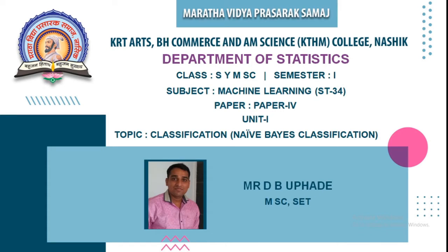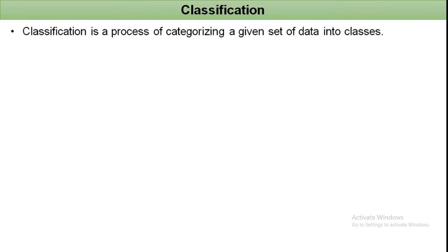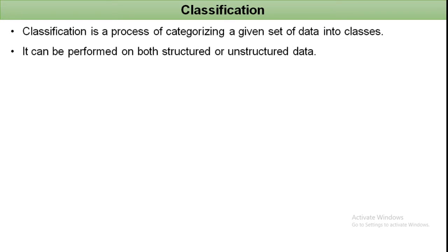Hello students, welcome to the second lecture of machine learning. In this lecture we will see the topic classification, particularly Naive Bayes classification. Classification is the entire process of making homogeneous and non-overlapping groups according to their similarities. Classification is a process of categorizing a given set of data into classes.